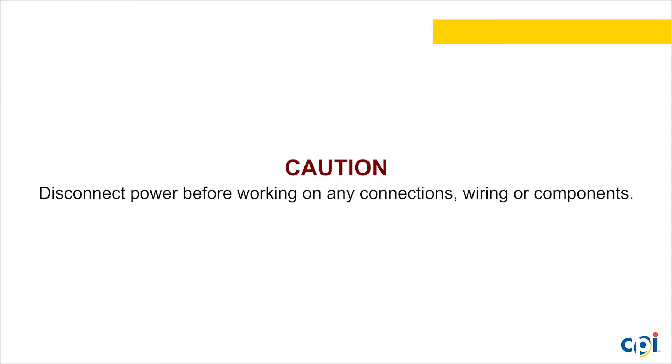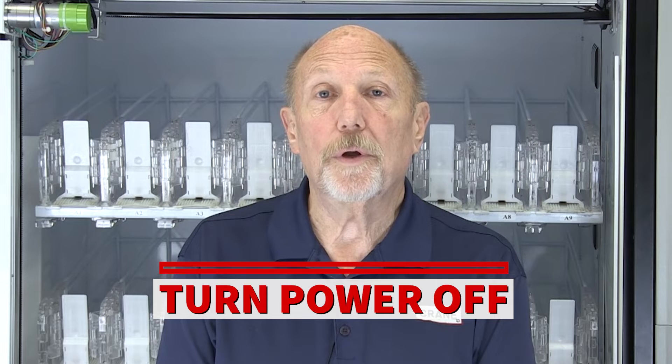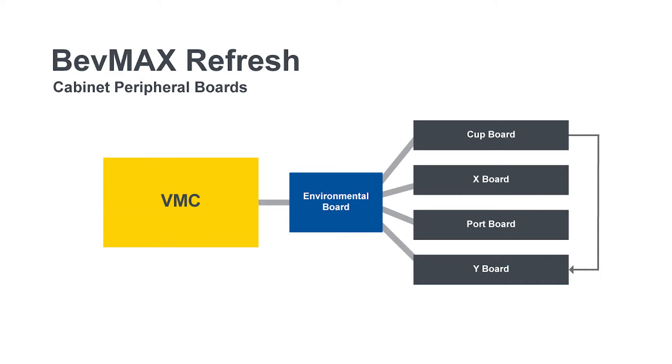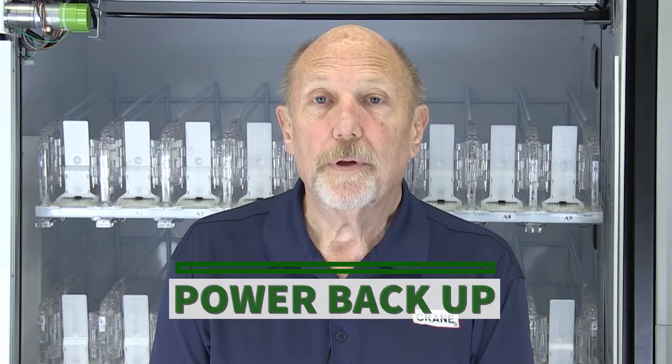It won't be uncommon if I see multiple boards beginning with either a 0 or an odd number. That's where we're going to take the next step. We're going to start the process of troubleshooting what boards are communicating and what aren't. The first thing we're going to do is turn the power off, disconnect the port board, the X motor board, and the Y motor board. When I disconnect the Y motor board, it also eliminates the cup board as well. Then we power back up, and what we want to see is that the environmental board and the control board are communicating.